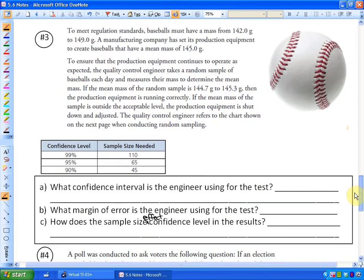We're going to look at one having to do with baseball. I will read this to you. It says, to meet regulation standards, baseballs must have a mass from 142 grams to 149 grams. The manufacturing company has set its production equipment to create baseballs that have a mean mass or an average mass of 145 grams. So they've set up their equipment to have an average mass. Their average baseball is going to have 145 grams.